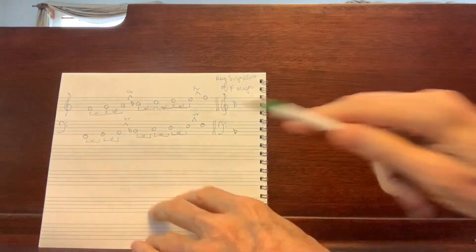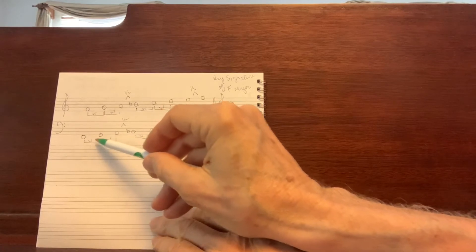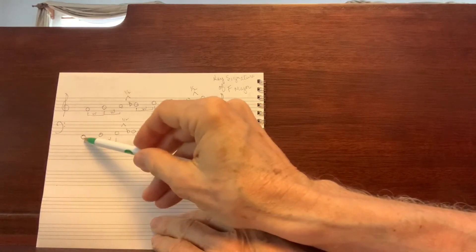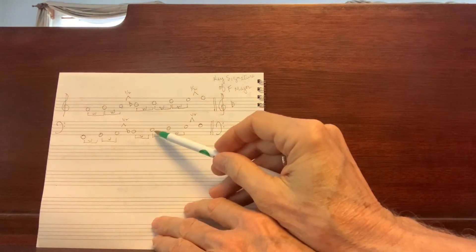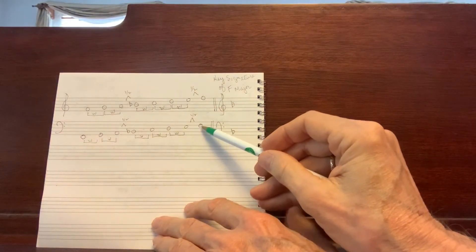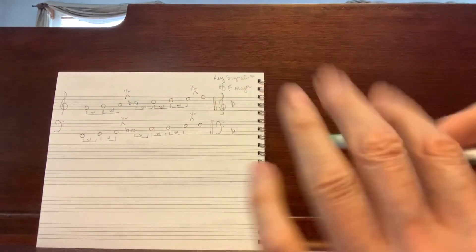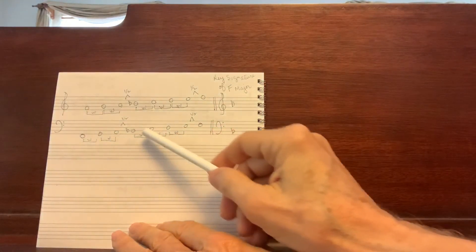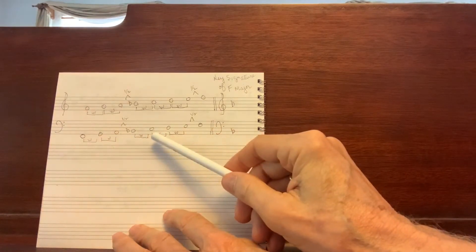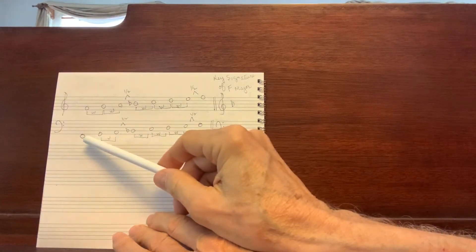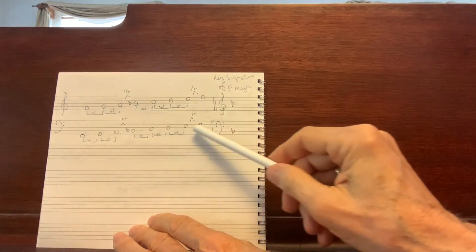All right. Let's do some reading together. F, G, A, B. Again. Fast. Second group: C, D, E, F. Let's go from F to C. Faster. See if we can go right up: F, G, A, B, C, D, E, F. Again. Great.